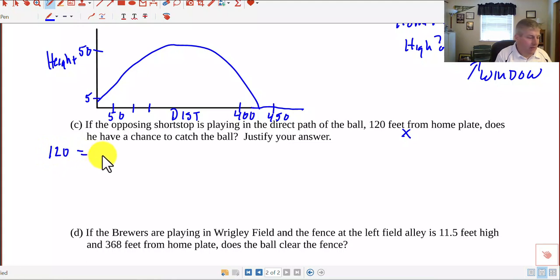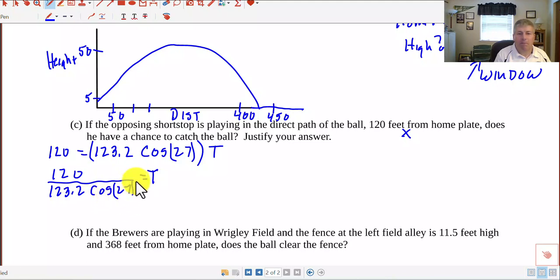We can substitute into our X equation, 120 equals 123.2 cosine of 27 times T, and we can solve for T, because once we know the time at which it's 120 feet, then we can substitute into our Y equation. We can take that time, put it into Y, and see how high it is. We'll see if it's over the shortstop's hat. Dividing both sides by all of this 123.2, we get T equals 120, all divided by 123.2 cosine 27. Be careful with your parentheses when putting that in your calculator, and we get a value of T 1.093 seconds.